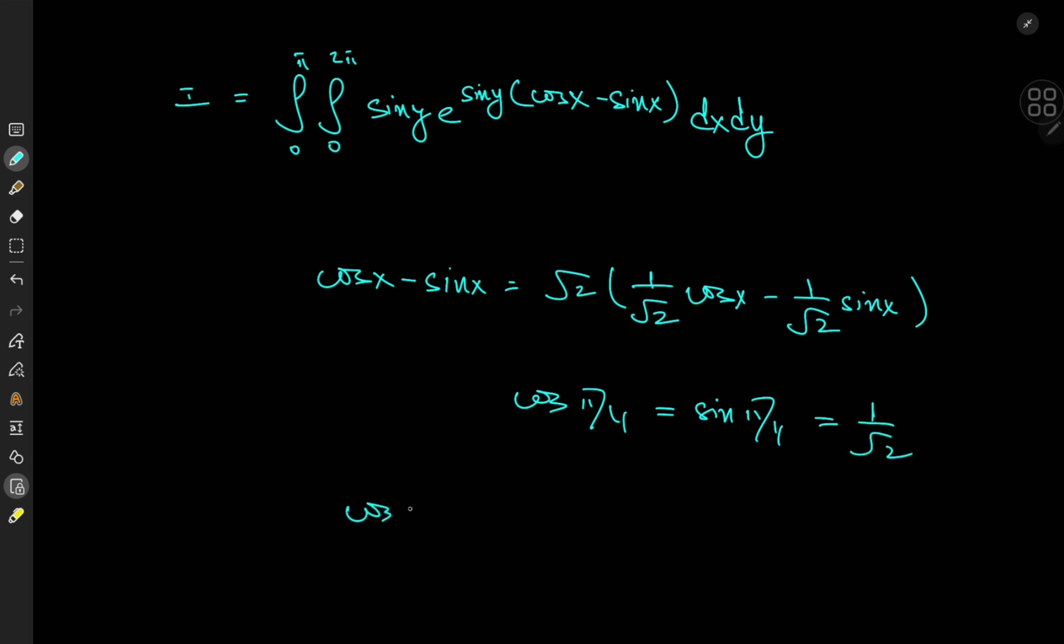So that means cosine x minus sine x is actually equal to root 2 times cosine x times cosine pi over 4 minus sine of x times the sine of pi over 4.